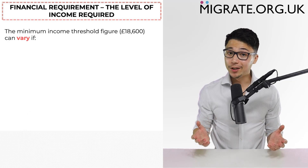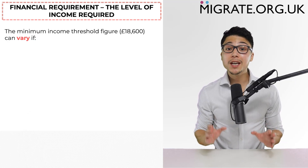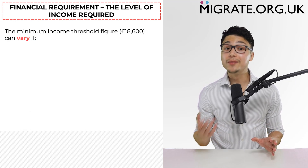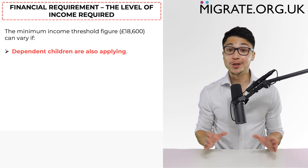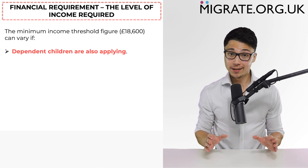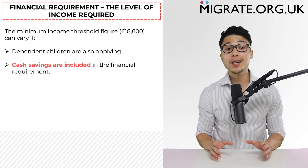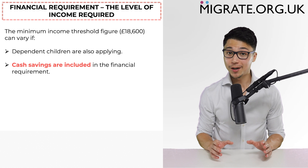This is known as the minimum income threshold. I use the word 'starting point' because the minimum income threshold can vary if: one, dependent children are also applying, and two, cash savings are being included in the financial requirement.